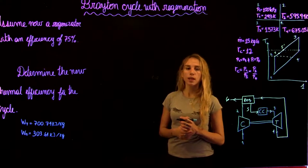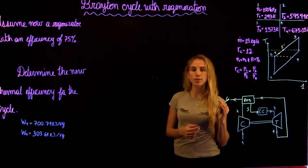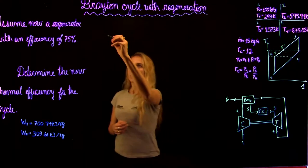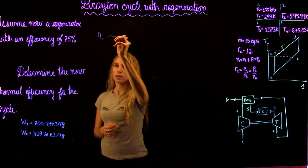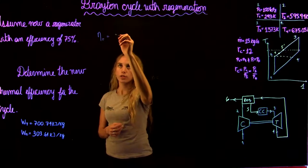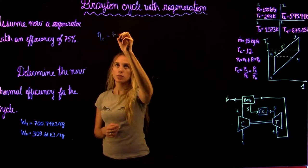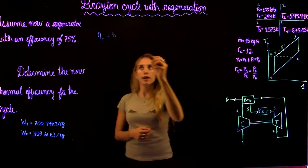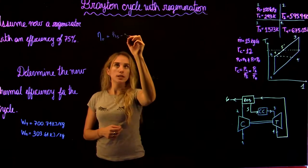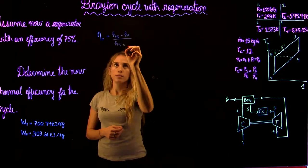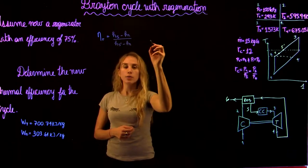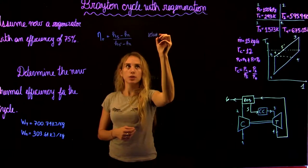Now we're asked to assume that the regenerator has an efficiency of 75%. The efficiency of the regenerator is the actual over the ideal, so it's h5 minus h2 over h5 prime minus h2. When you have an ideal regenerator,